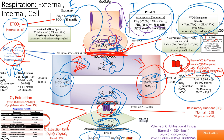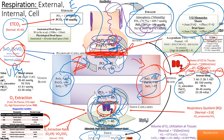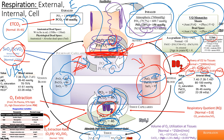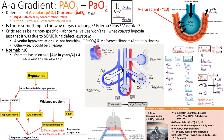To summarize: you inhale, the alveolus exchanges oxygen with blood delivered via the pulmonary artery, then the arterial system delivers it to the tissues, which exchange O2 and CO2 through cell respiration — producing CO2 and water — and the venous blood returns all the way back to the alveoli.